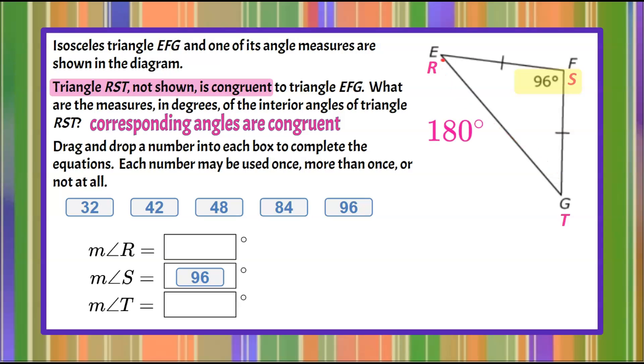So seeing as we know that all three interior angles of a triangle have a sum of 180 degrees, let's take away the angle that we know. 180 degrees subtract 96 degrees gives us 84 degrees. So we know that angle R and angle T added together need to have a sum of 84 degrees.